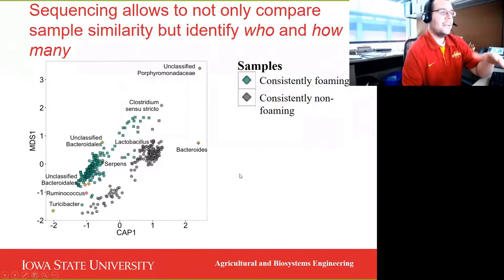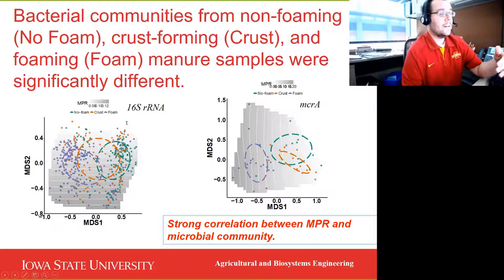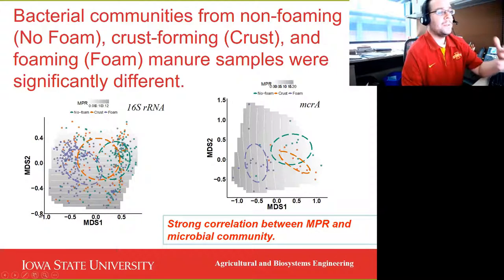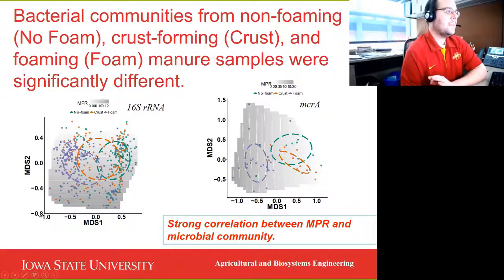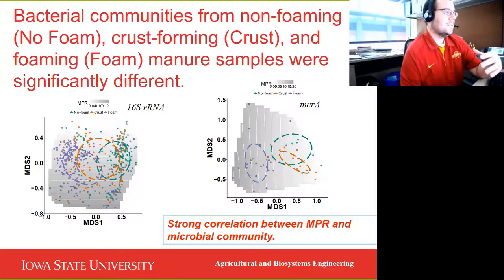So we know there are some differences in the microbial communities, but can we relate that to anything? This graph is sampled based on 16S RNA, which is basically all types of microbes in the manure. The gray bar shows the methane production rate — dark gray lines mean higher methane production, lighter color means lower. A purple dot represents one manure sample from a foaming barn, a green dot from a non-foaming barn, and orange symbols represent manure samples from a barn that was crusted when we sampled it. The circles drawn on this graph represent where the centroid of that microbial community is thought to exist. All our circles do overlap, but you can see a pretty good difference between foaming and non-foaming barns — they're clustering to different areas.